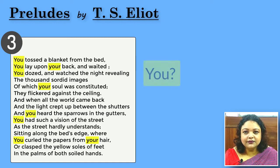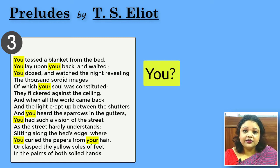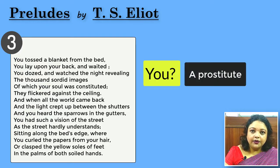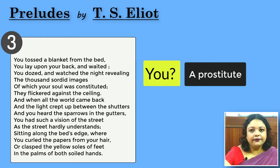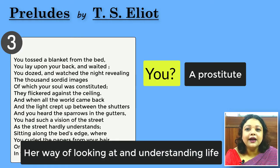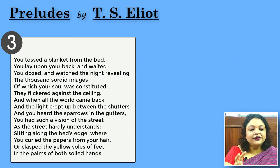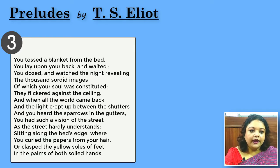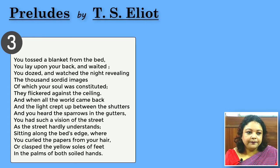Who is 'you'? Is it the reader whom Eliot is directly talking to, or is it somebody else? Going through Eliot's own notes, we know that he is definitely talking about a prostitute. When she wakes up in the morning with the memory of the last night's burden, her way of looking at life and understanding things is highlighted here. Ironically, in stanzas 1 and 2 you don't have any complete human figure — you have office-goers' feet, hands lifting up windows, feet trampling the street — fragmented bodies. In the third stanza, you find a complete human being lying on the bed.